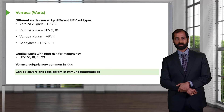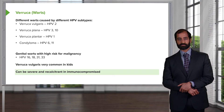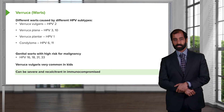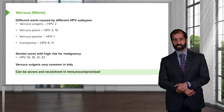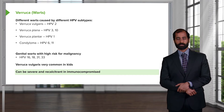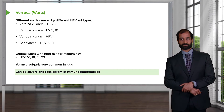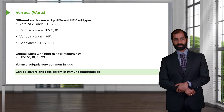Verruca vulgaris can be severe and recalcitrant in immunocompromised individuals, meaning those who might have HIV or who are on immunosuppressant therapy may present with HPV that is not responding to medications — recalcitrant.